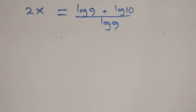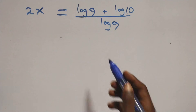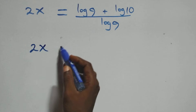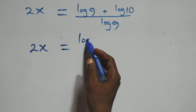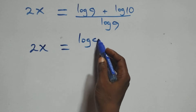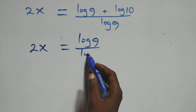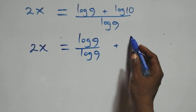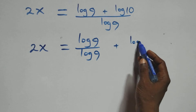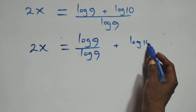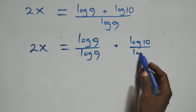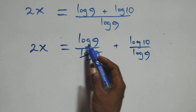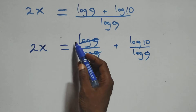Then at the next step we separate this into two fractions. We have 2x equals to log 9 over log 9 plus log 10 over log 9. The log 9 over log 9 terms cancel each other, leaving one.